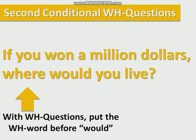Second conditional WH questions. Remember, WH questions have a who, what, when, where, why, or how. For example, if you won a million dollars, where would you live? With WH questions, simply put the WH word — who, what, when, where, why, or how — before 'would'. Where would you live? Why would you live there? When would you live there? Et cetera.